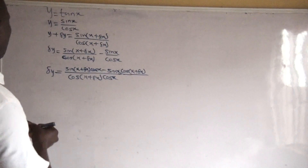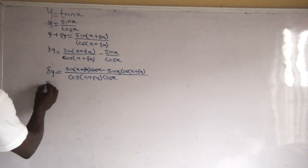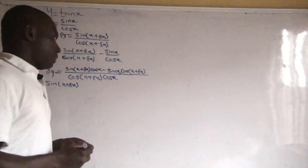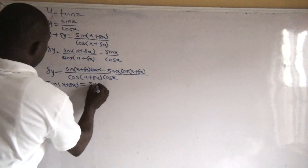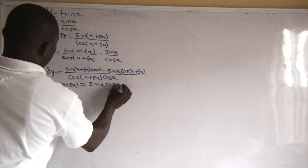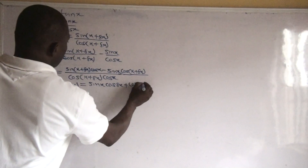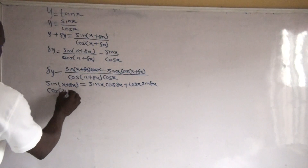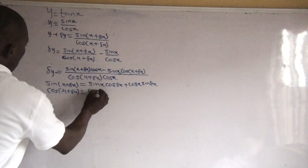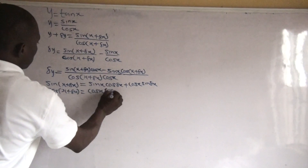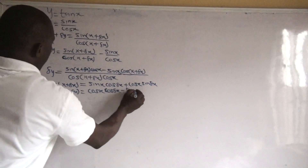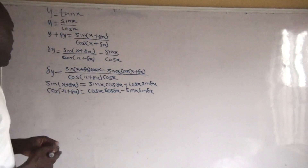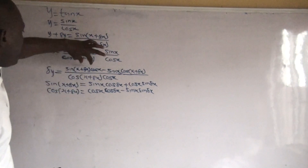We need to recall some trigonometric identities. From the sum of angles formula: sin(x + Δx) = sin x·cos(Δx) + cos x·sin(Δx). Similarly, cos(x + Δx) = cos x·cos(Δx) − sin x·sin(Δx).